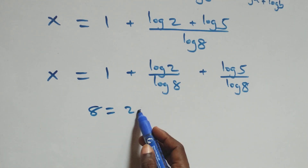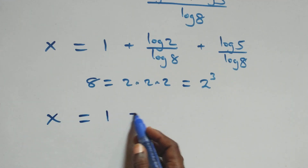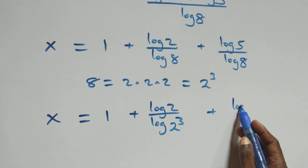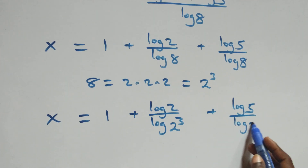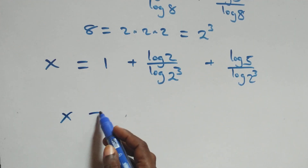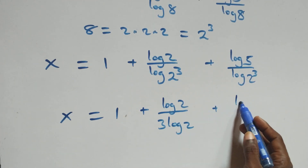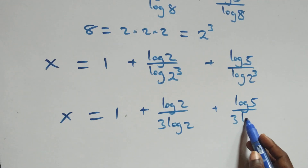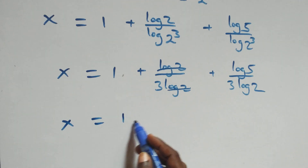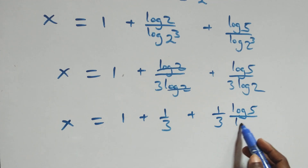We can also write 8 as 2 × 2 × 2, which is the same as 2 raised to power 3. So we have x equals to 1 plus log 2 over log(2³) plus log 5 over log(2³). Applying the power rule, the 3 comes down: x equals to 1 plus log 2 over 3·log 2 plus log 5 over 3·log 2. The log 2 terms cancel, giving x equals to 1 plus 1/3 plus 1/3 times log 5 over log 2.